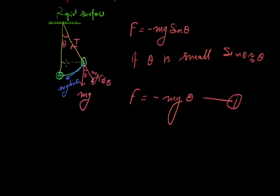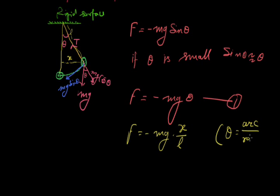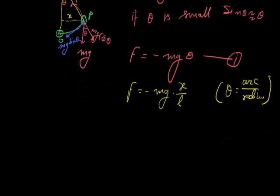Here, theta can be expressed where x is the displacement, theta is very small, and L is the length. Then F is equal to minus Mg times θ, and θ equals arc upon radius, which can be considered as x upon L. The length of the pendulum is considered as the radius, and x is considered as the arc. This arc can be considered equal to x when the angle is small. We know that for harmonic motion, F is equal to minus Kx.